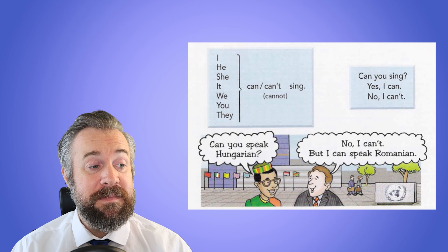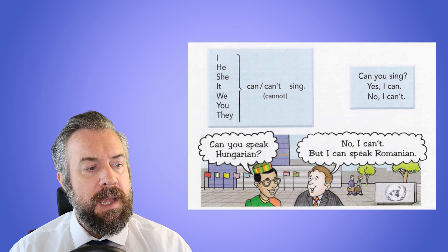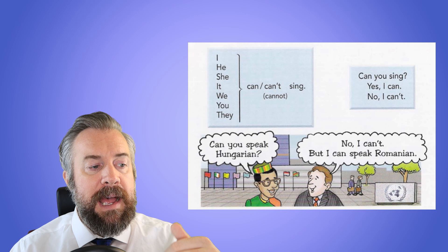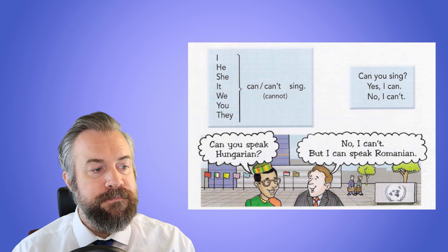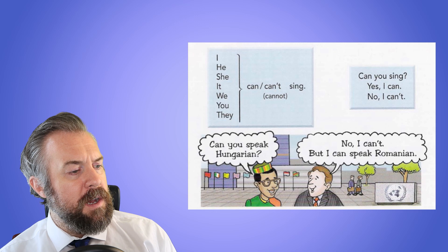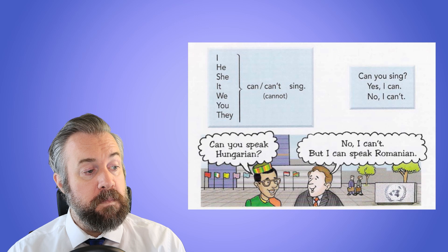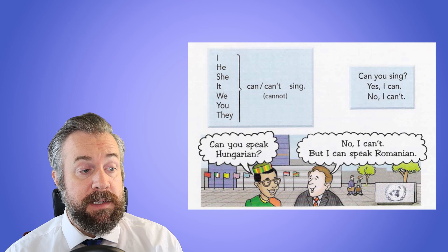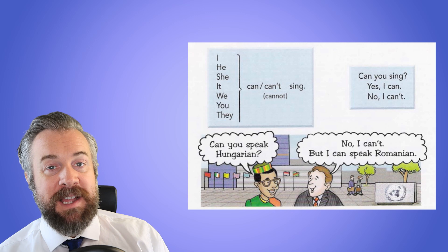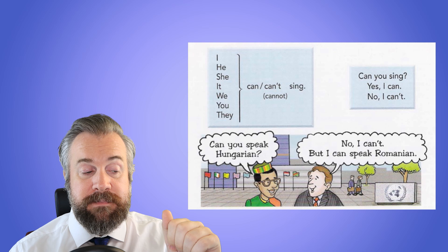Can you sing? Yes, I can. No, I can't. So we will be talking about the question 'can you' and in the answer we will use both 'can' and 'can't.' The example here is: Can you speak Hungarian? No, I can't, but I can speak Romanian. Personally I can't speak Hungarian or Romanian.